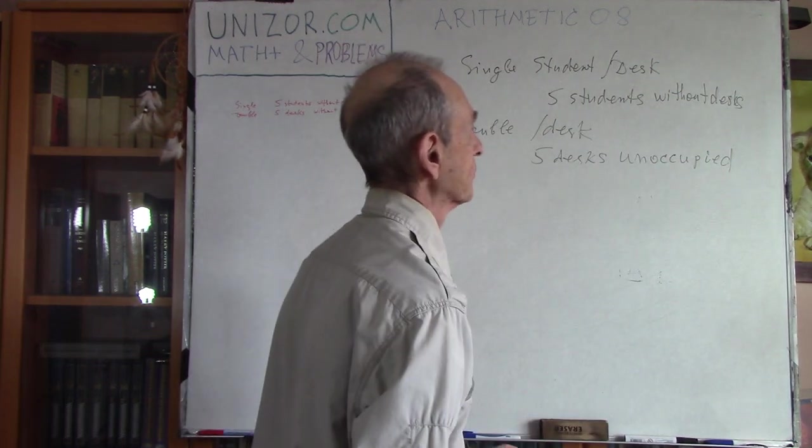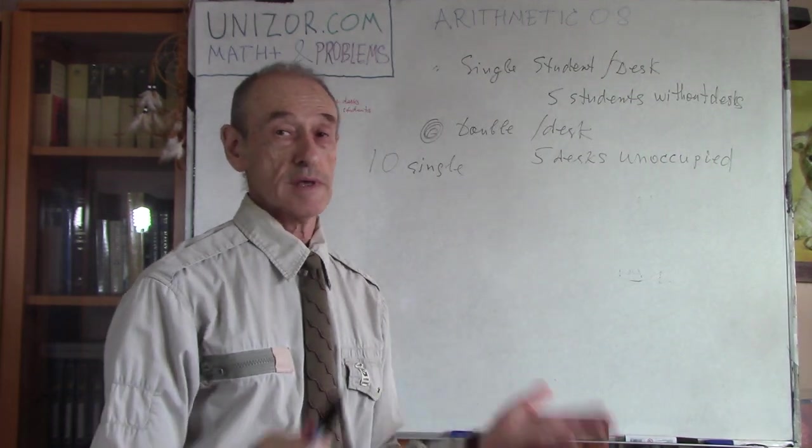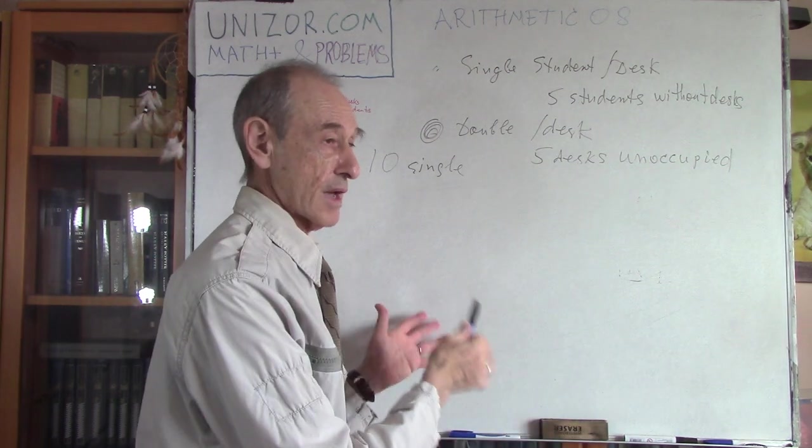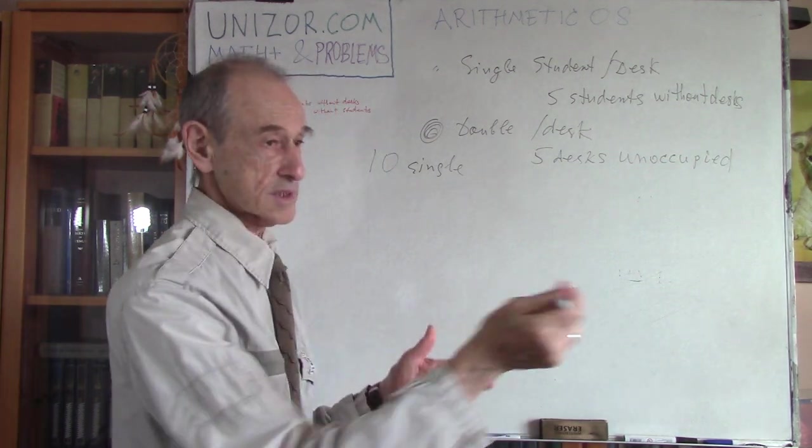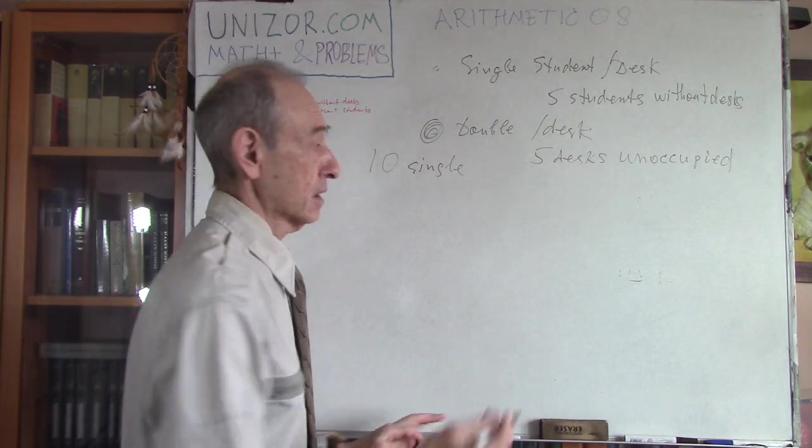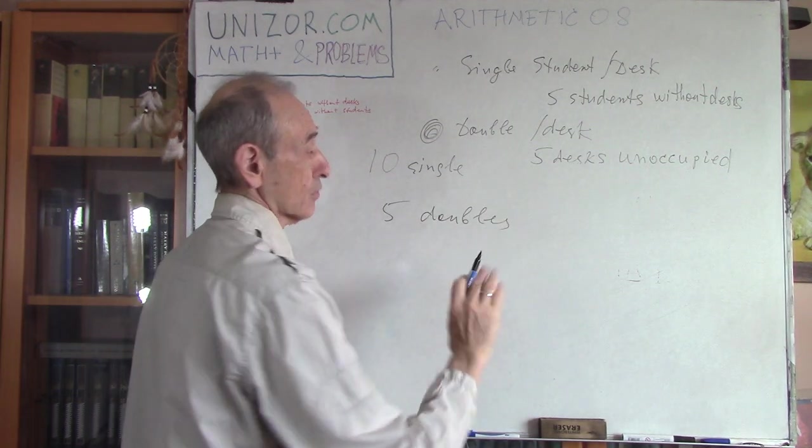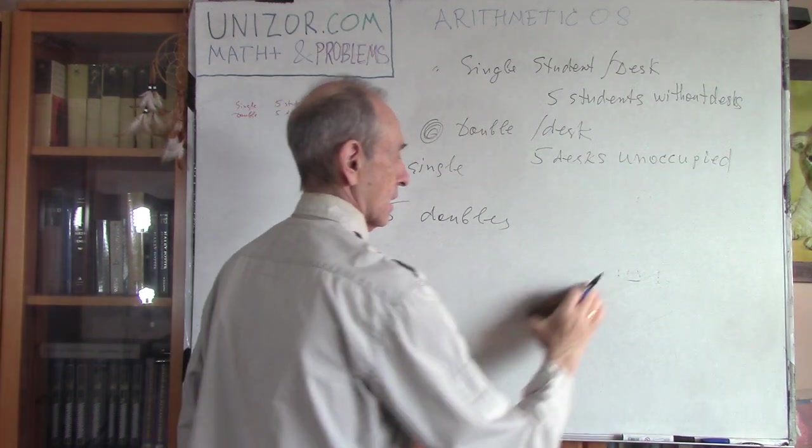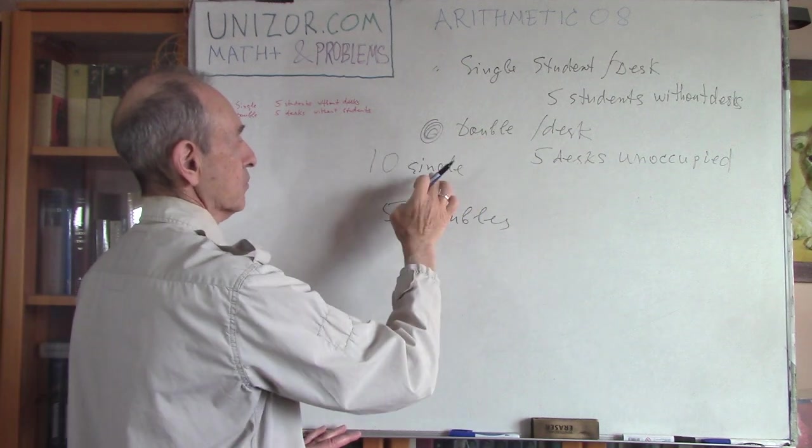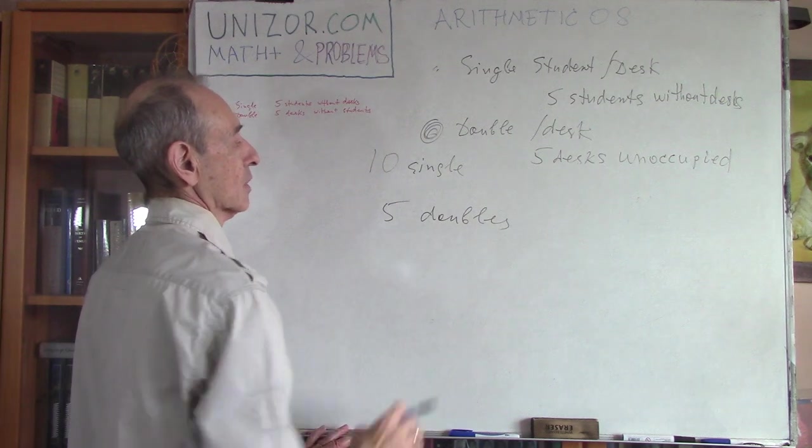So we have single students per desk, and we have five students without the desk. So what do we do with these five students? We put these five students to some other five singles, making them double, which means you will have five doubles. And the rest will remain singles.